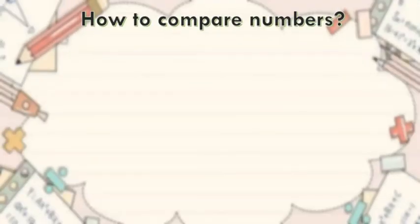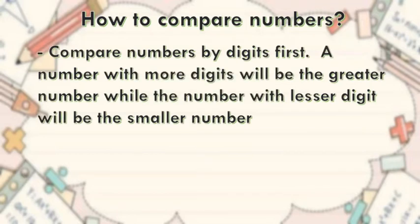How to compare numbers? Compare numbers by digits first. A number with more digits will be the greater number, while the number with fewer digits will be the smaller number.